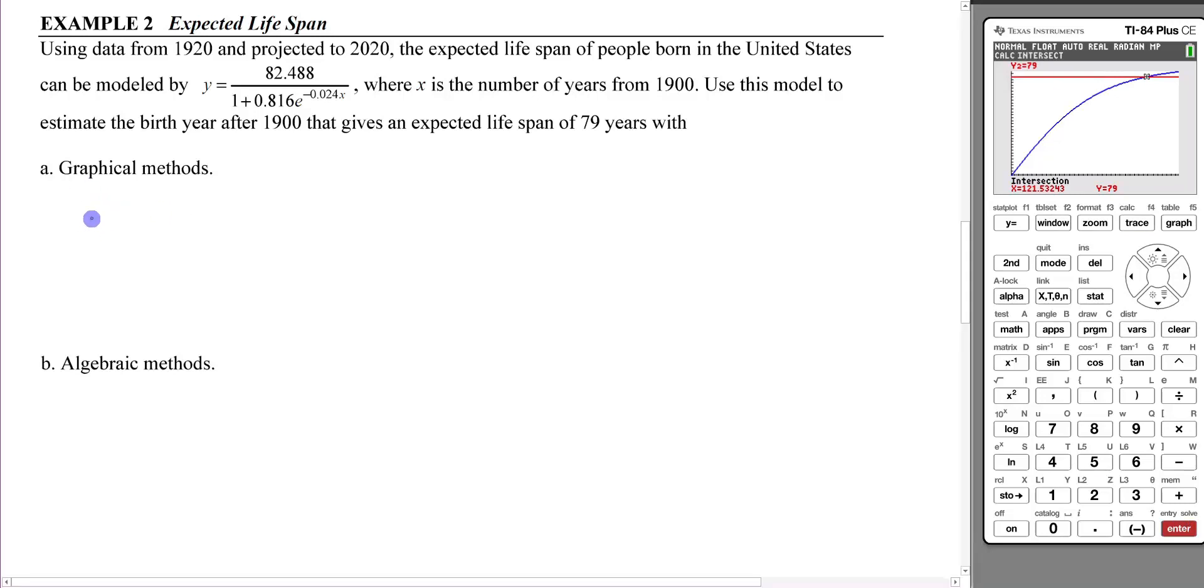Using graphical methods, we get about 121.5 years, and that's the number of years after 1900. That means the year 2021 and a half, so let's bump that up to 2022. In the year 2022, we'll have an expected lifespan of 79 years.